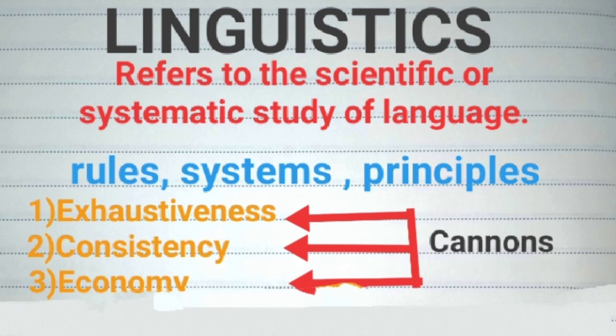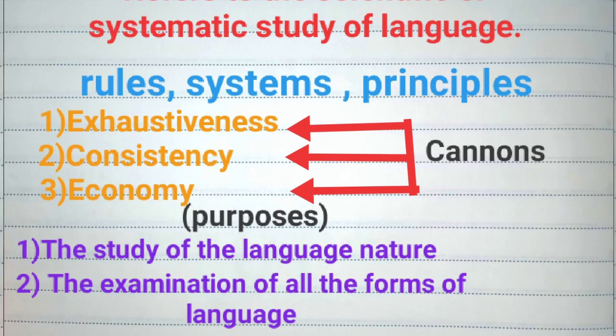Exhaustiveness means it strives for thorough examination of relevant materials. Consistency means there should be no contradiction between different parts of the total statement. Economy means a shorter statement or analysis is to be preferred to one that is longer or more complex.